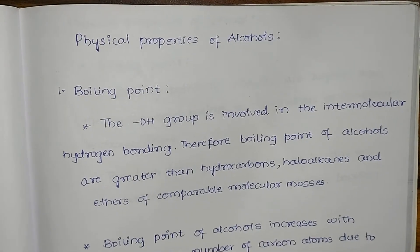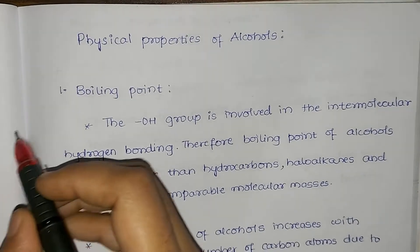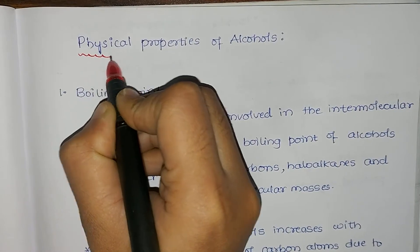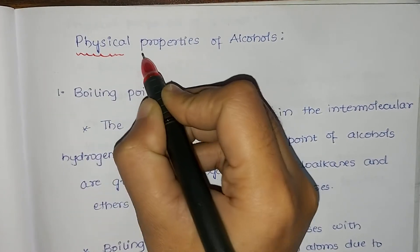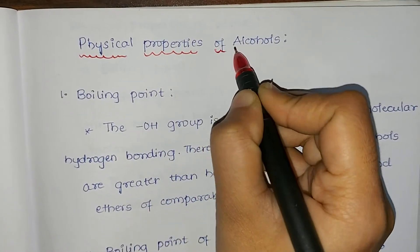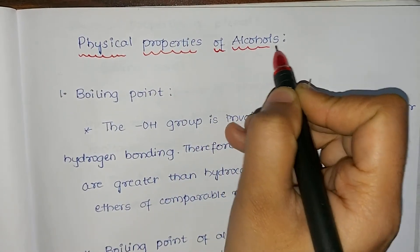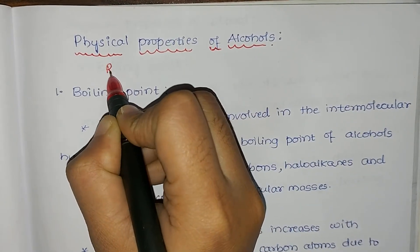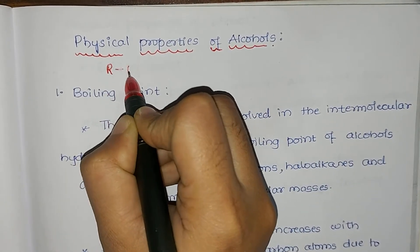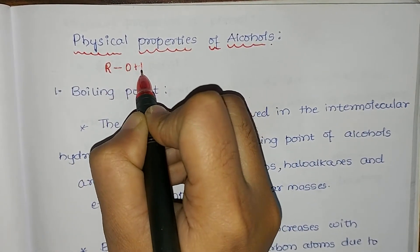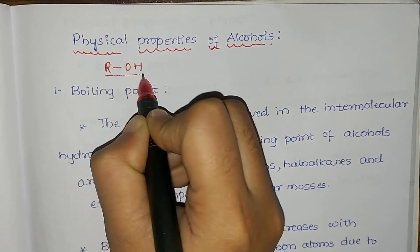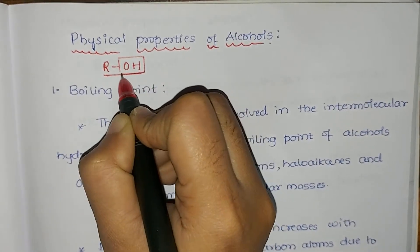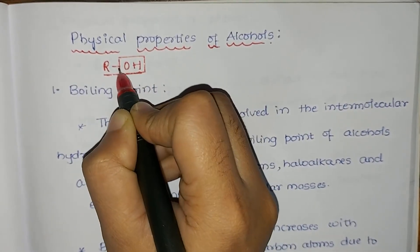Hello students. In today's video we will be discussing the physical properties of alcohols. Let us consider how alcohols are represented. Alcohols are represented by the general formula ROH, where the OH group is attached to an alkyl group R.